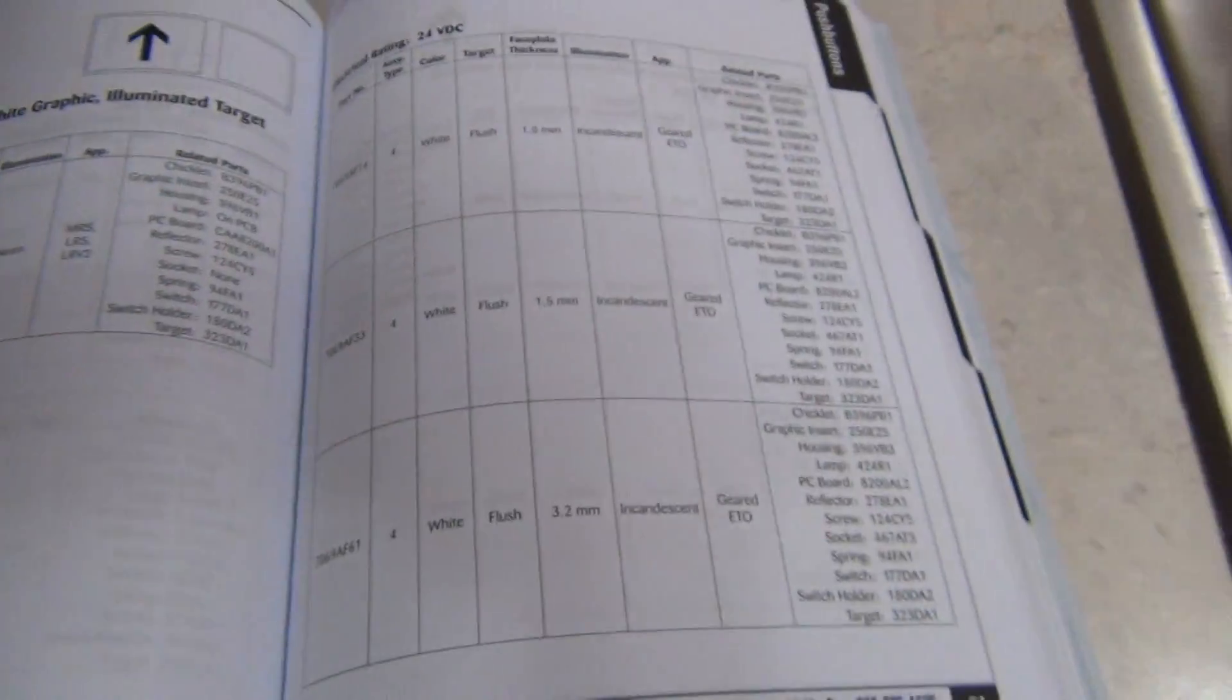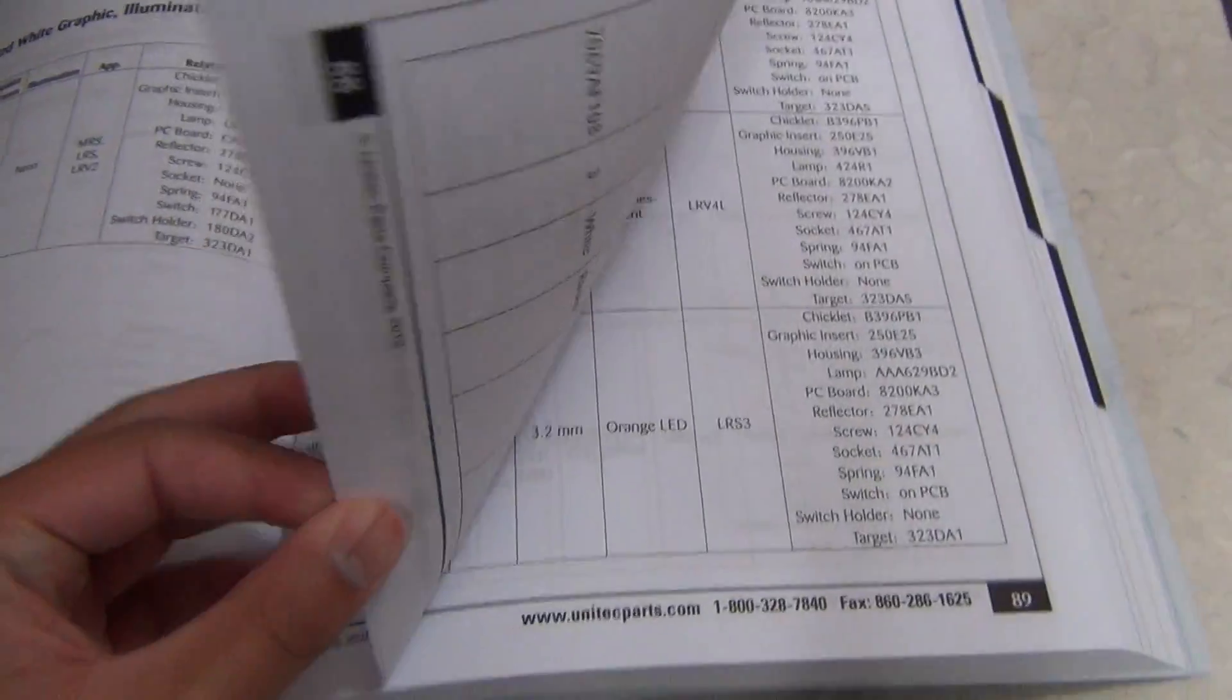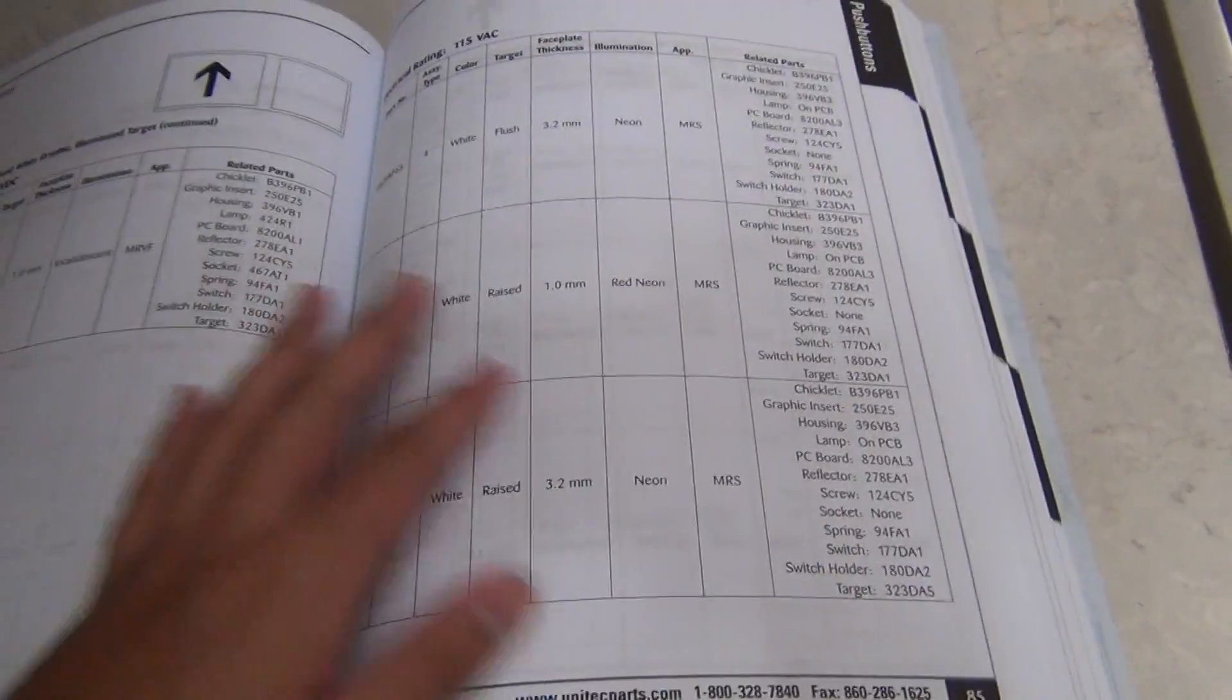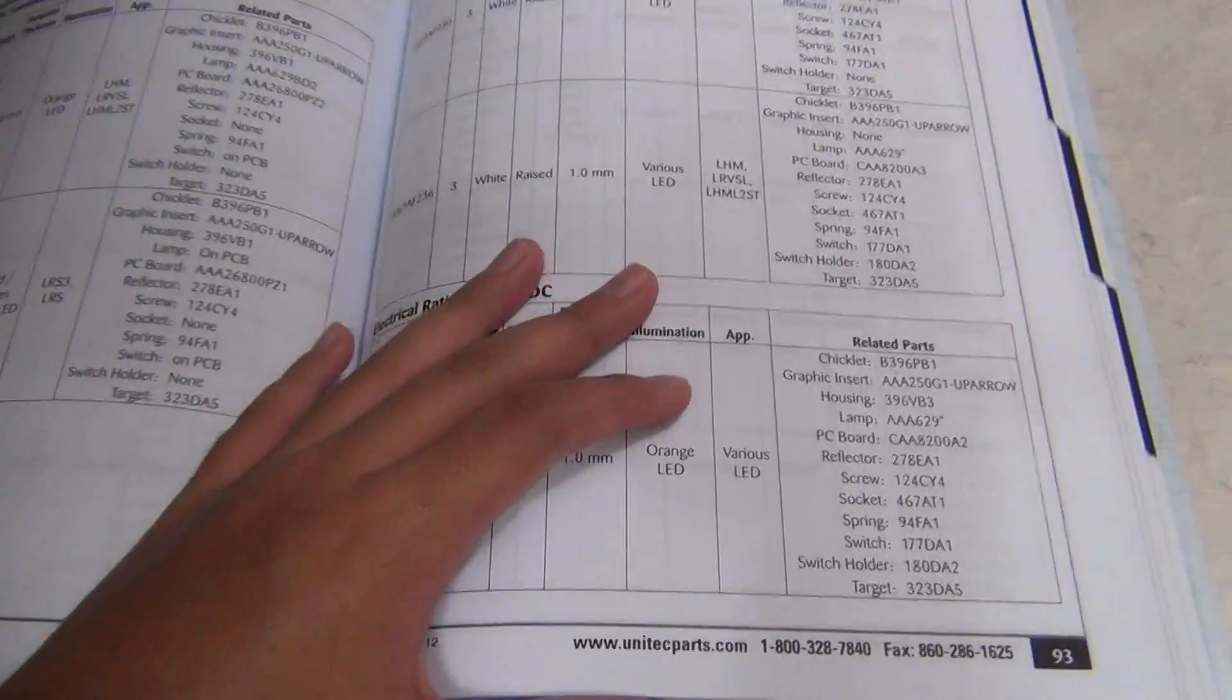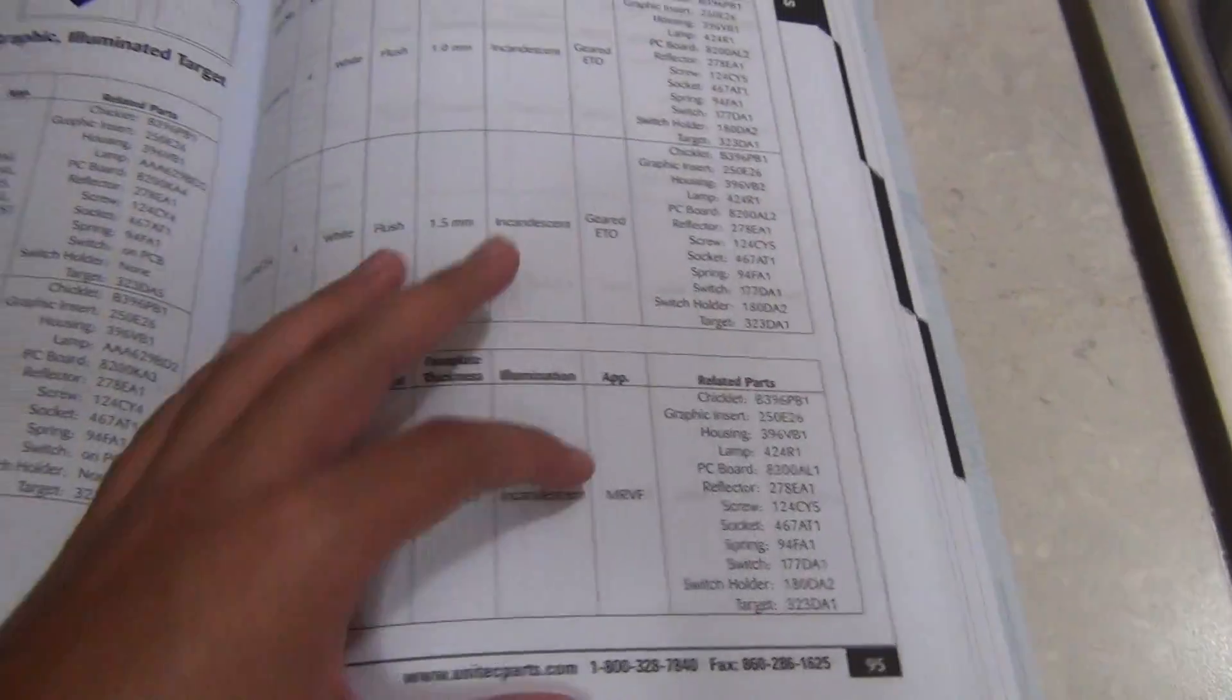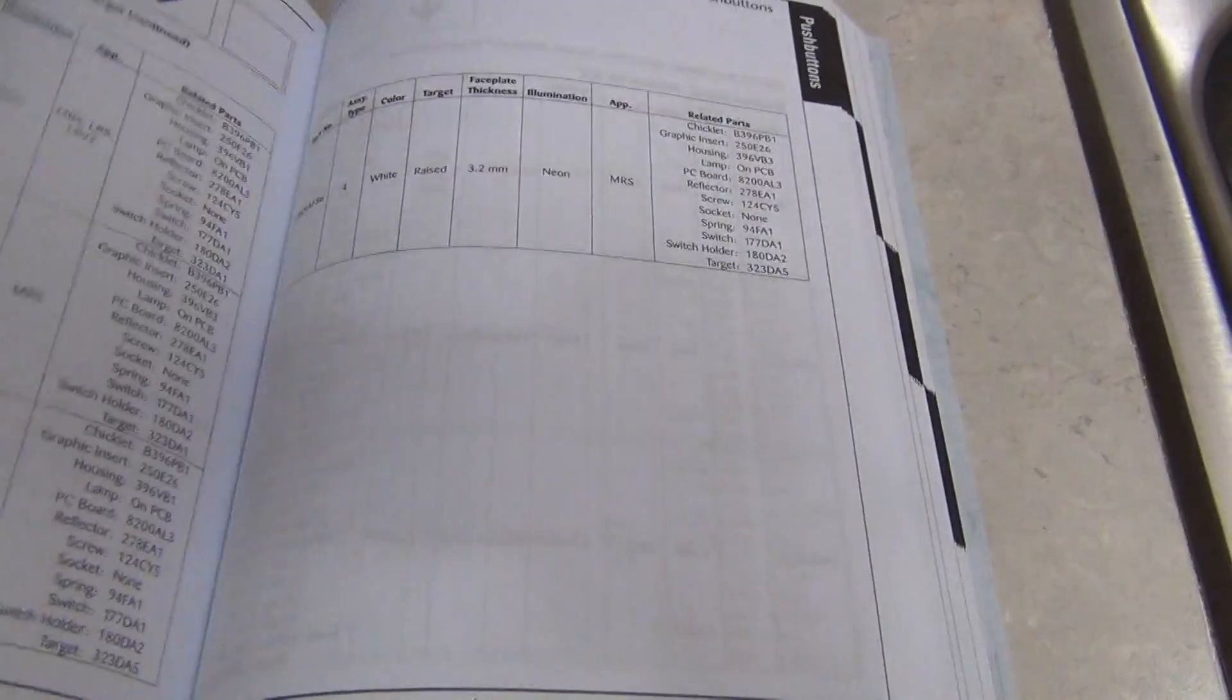You just look in the back, and it tells you the part number. Because not all buttons from Otis are 24V, they actually have 6V and 12V. And luckily, I have a 6V button, and luckily I didn't blow it. Because that would be hard to replace LEDs inside.